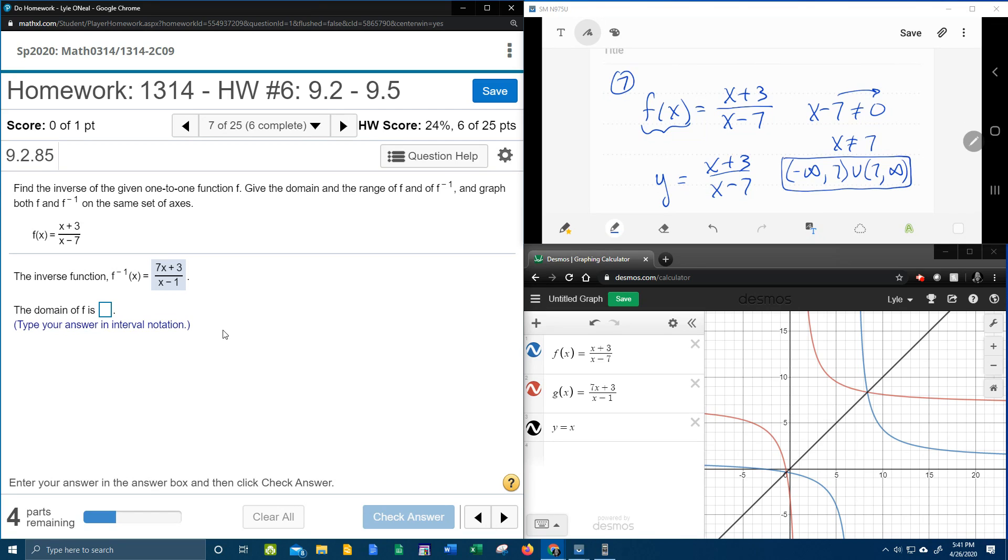This is the way that you write the domain, showing that you're going to leave out 7 and include everything else. So there's the domain of f.